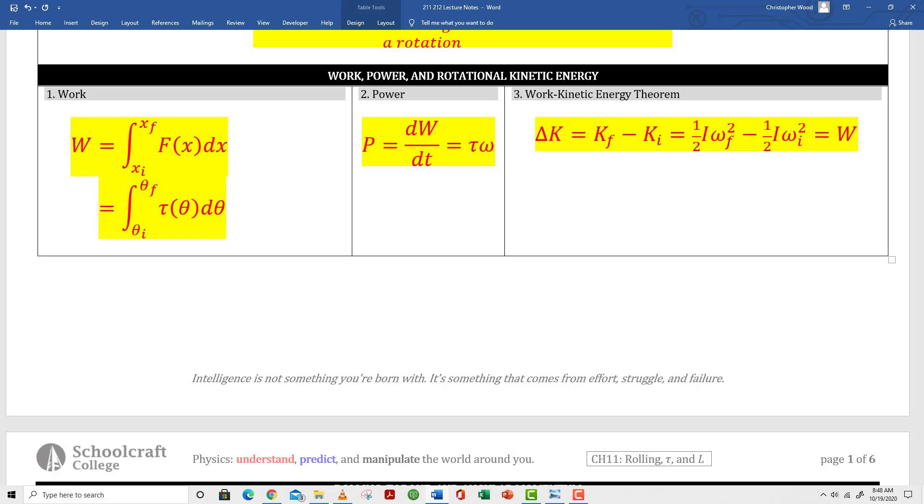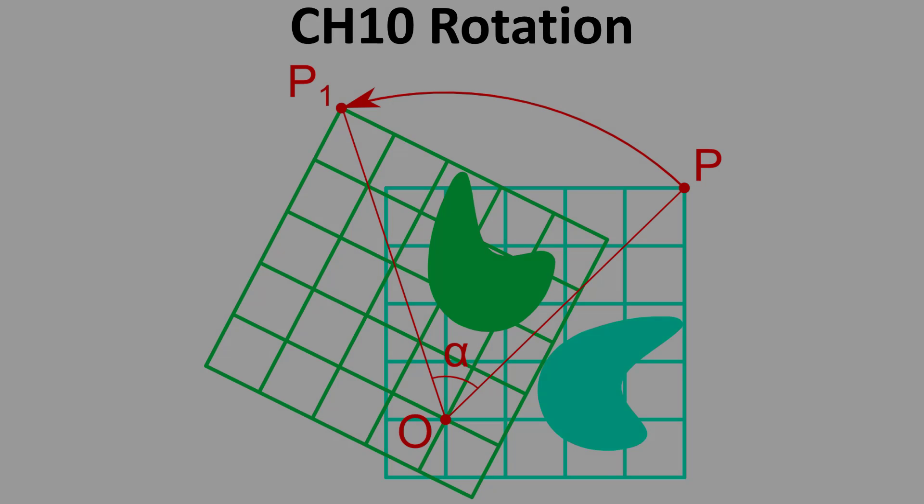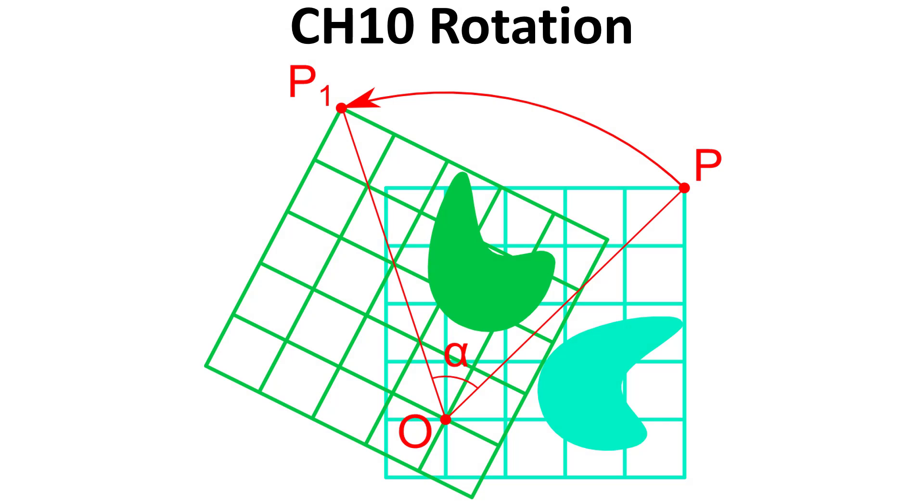To conclude, let's look again at work, power, and kinetic energy. Box number one shows the definition of work that is now extended to include force times distance and torque times angular displacement. Box number two calculates power when you have an applied torque. And box number three is an updated version of the work kinetic energy theorem.